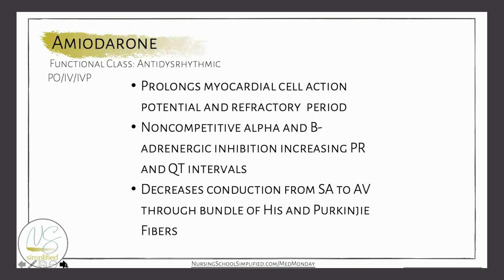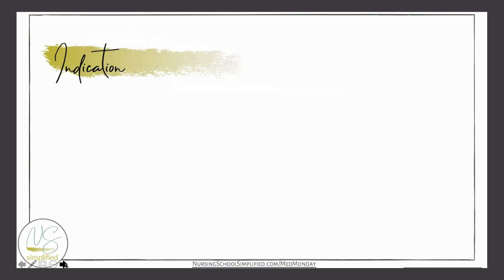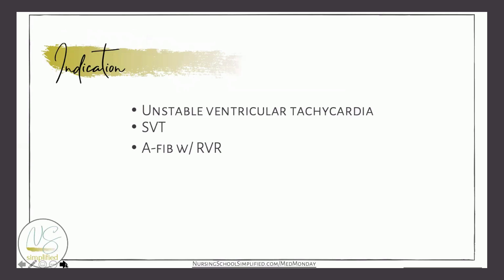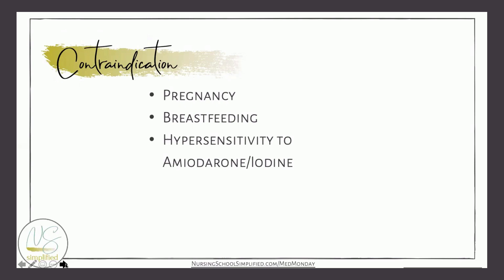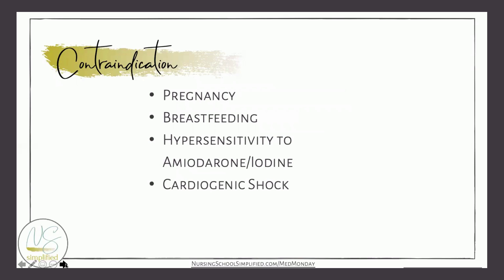Basically, what this medication does is slow down that conduction. Why do we give this medication? What is the indication? Unstable ventricular tachycardia, SVT, and atrial fibrillation with RVR — rapid ventricular response. Why is this medication contraindicated? Pregnancy, breastfeeding, hypersensitivity to amio or iodine, cardiogenic shock, and second and third degree AV blocks.